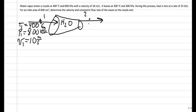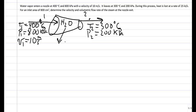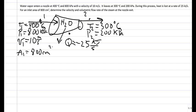At the exit side, we are given exit temperature T2 of 300 degrees Celsius and exit pressure P2 of 200 kilopascal. We are also told that heat is lost from this nozzle at a rate of Q dot equals minus 25 kilojoules per second, since it is heat that is lost. We are also given the inlet area A1 of 800 square centimeters, which converts to 0.08 meters squared.